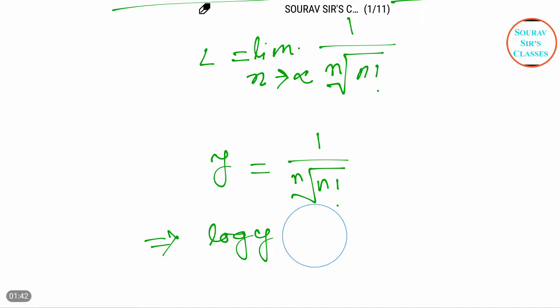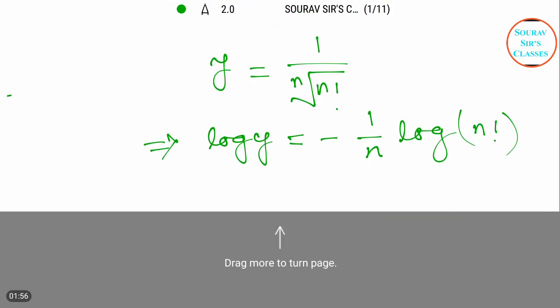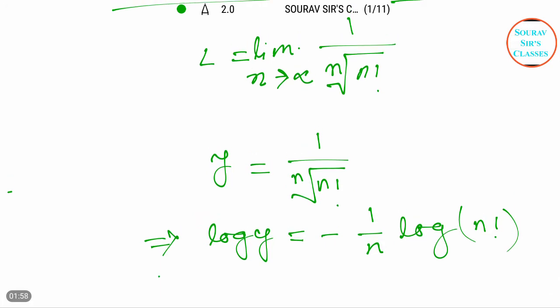Log y equals minus 1 by n log of n factorial. We can write it down like this for the next step. Now we can write it this way: log of y equals minus 1 by n.